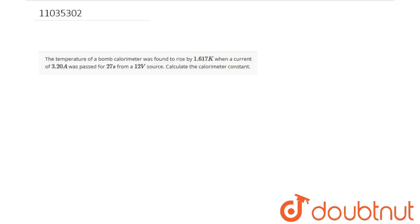In this question, the temperature of a bomb calorimeter was found to rise by 1.617 Kelvin when a current of 3.20 Amperes was passed for 27 seconds through a 12 volt source. We have to determine the calorimeter constant.